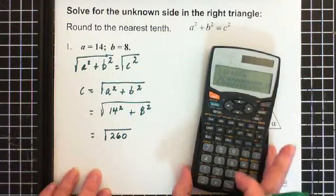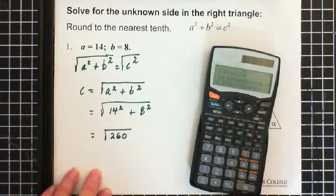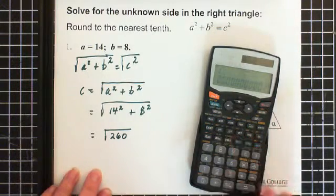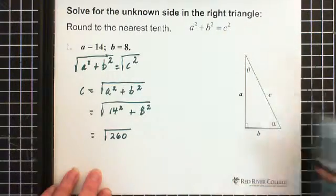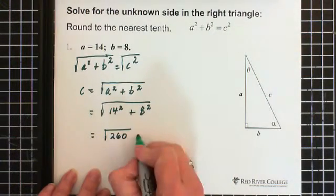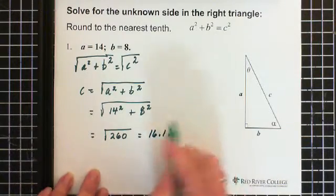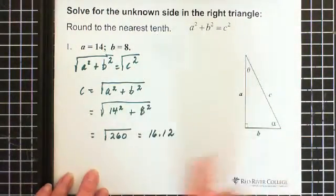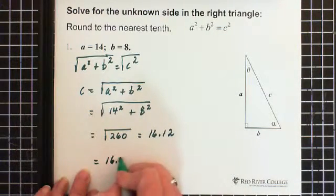Now on this calculator, I've got the number sitting there, and all I have to do is second function square root, equals, and it gives me the answer: 16.12. We've been asked to round to the nearest tenth, so our answer is 16.1.